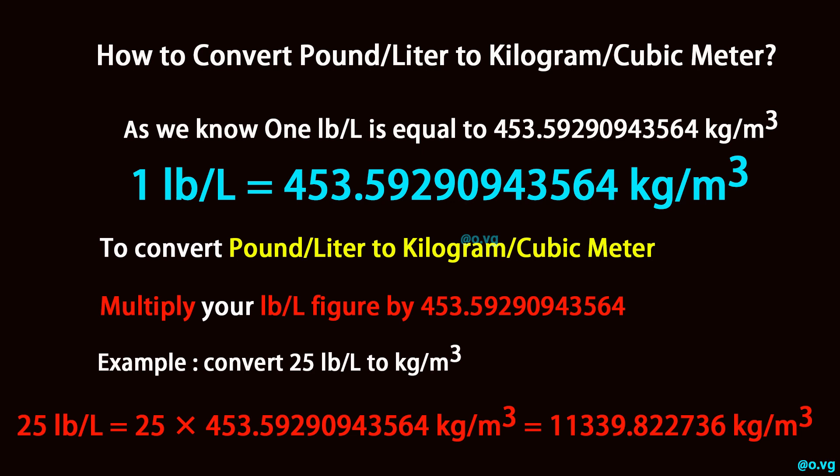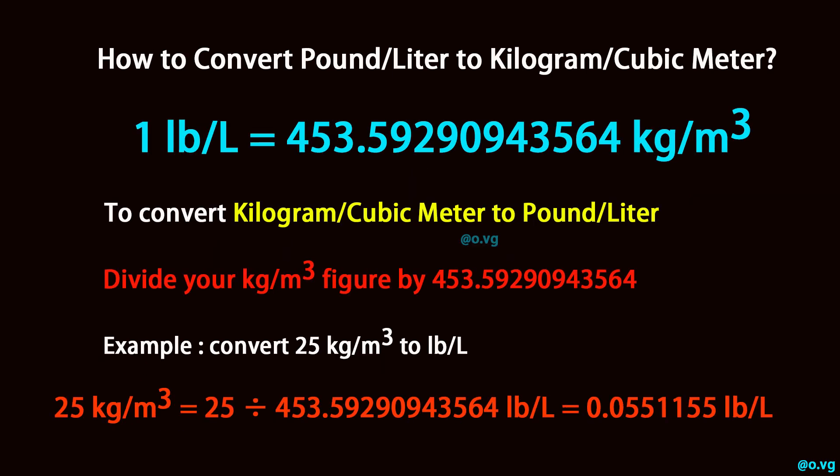Example: convert 25 pound per liter to kilogram per cubic meter. 25 pound per liter is equal to 25 times 453.59290943564 kilogram per cubic meter, which equals 11,339.822736 kilogram per cubic meter.